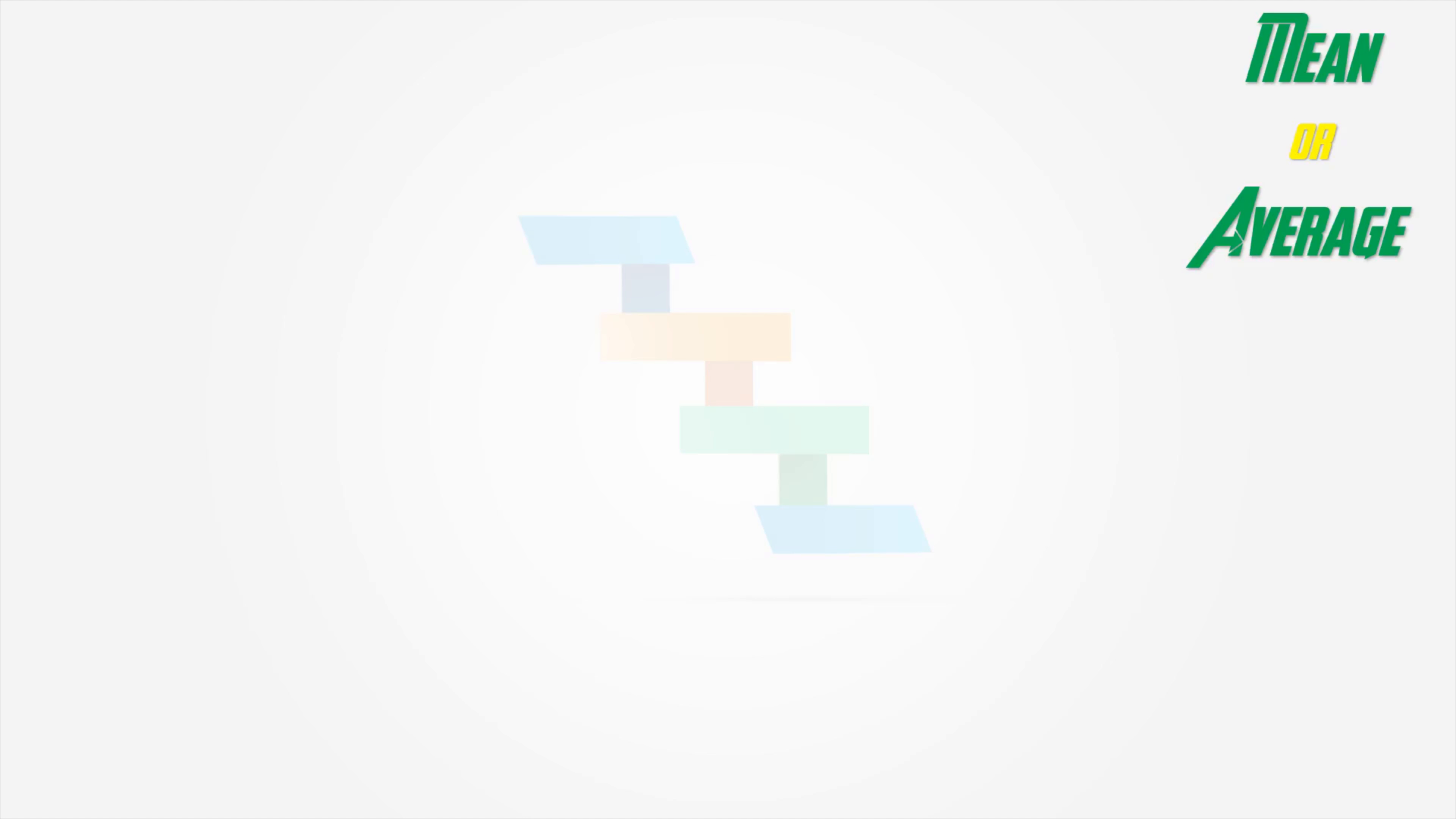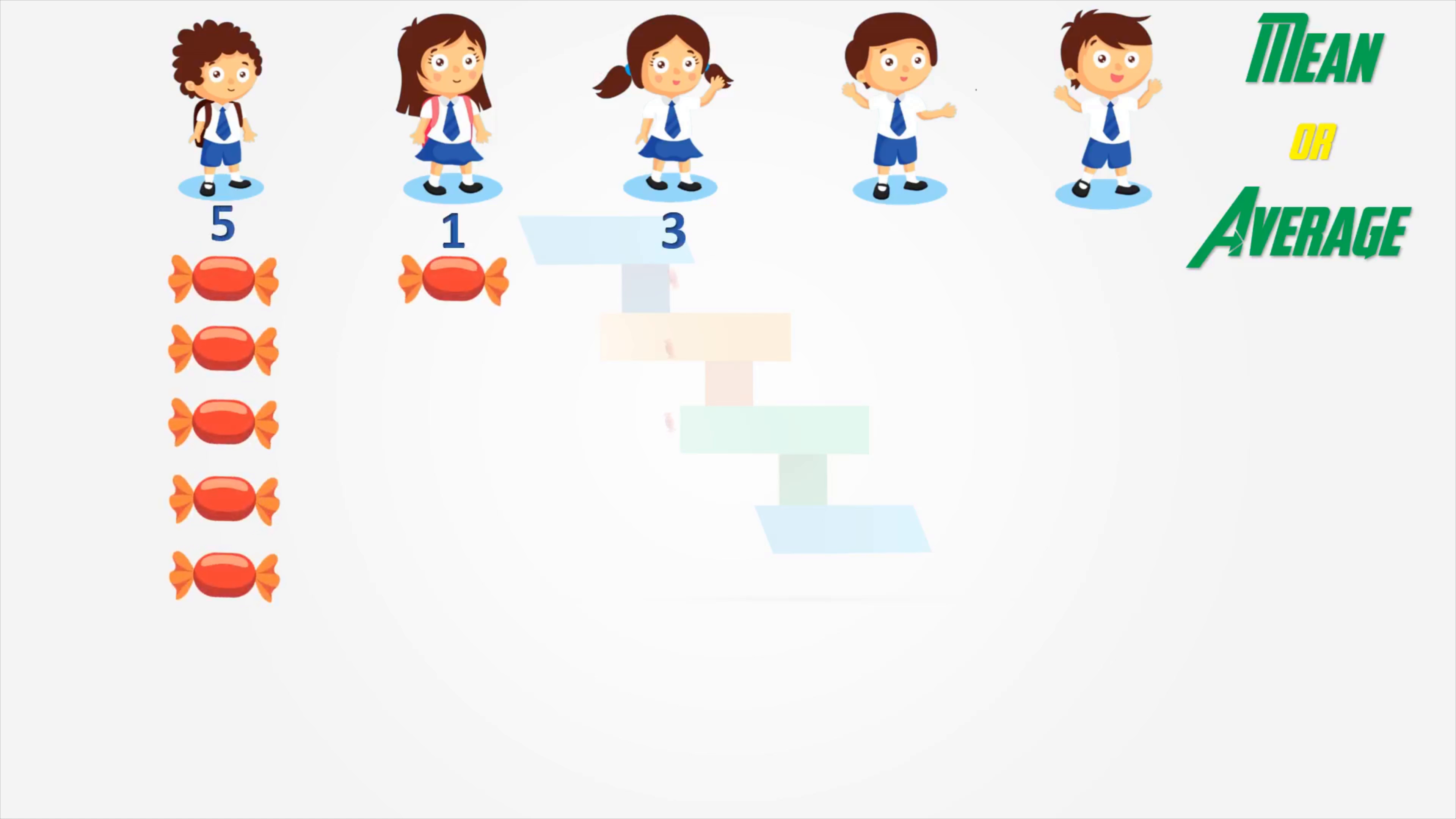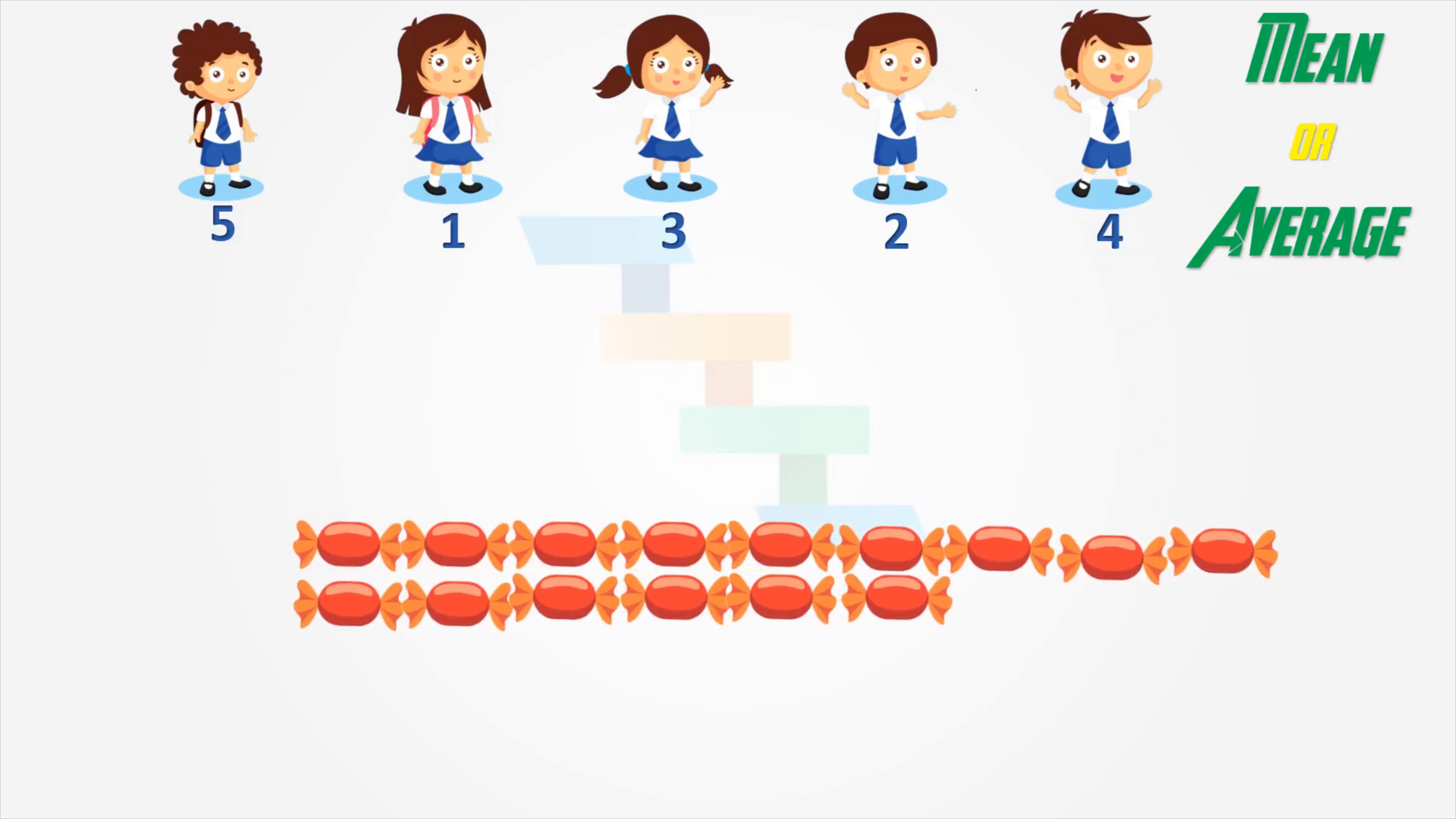In a classroom of 5 students, each one is asked to bring some chocolates. Teacher wants to collect these chocolates and share equally among these 5 students. First student bought 5 chocolates, second bought 1 chocolate, third bought 3 chocolates, fourth bought 2 chocolates, and the fifth one bought 4 chocolates. Now, teacher collects everything. Now, the teacher has 5 plus 1 plus 3 plus 2 plus 4 which is 15.